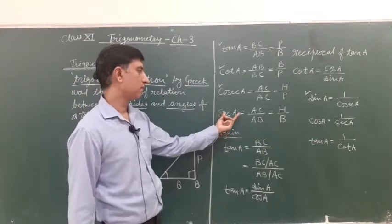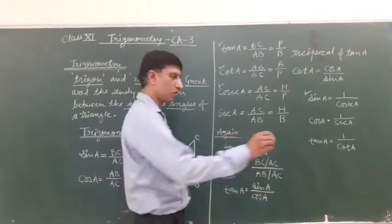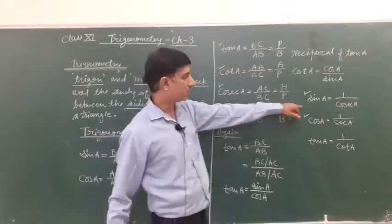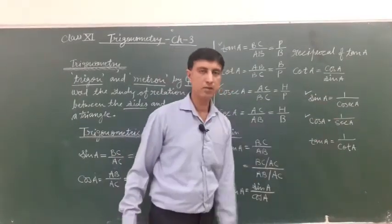sec A is AC upon AB and it is reciprocal of cos A. Cos A is equal to 1 upon sec A, sin A is equal to 1 upon cosec A, and tan A is equal to 1 upon cot A.